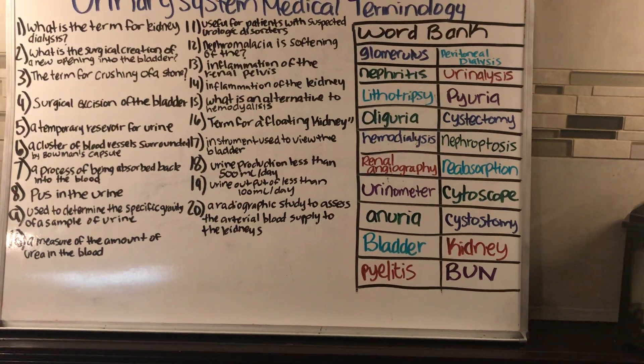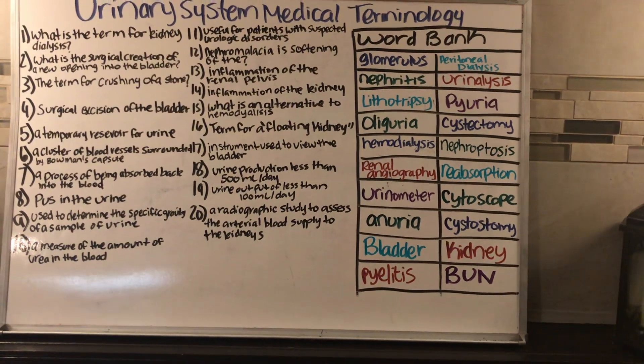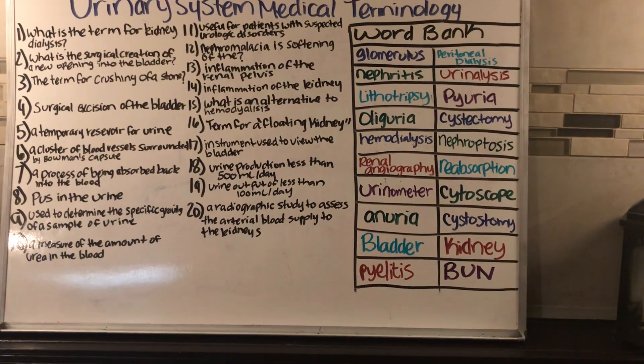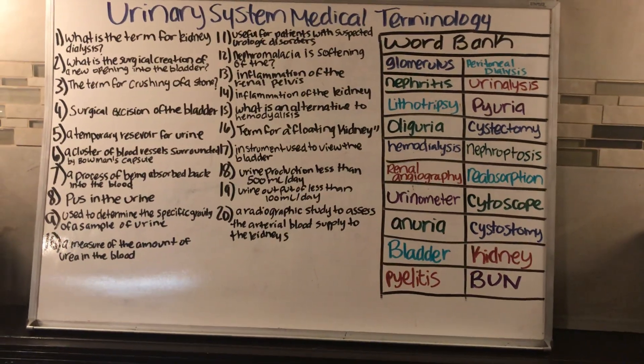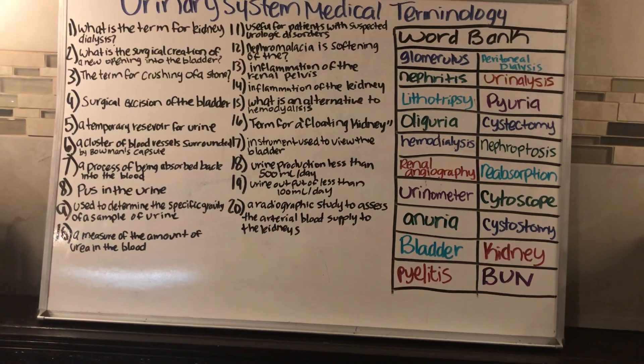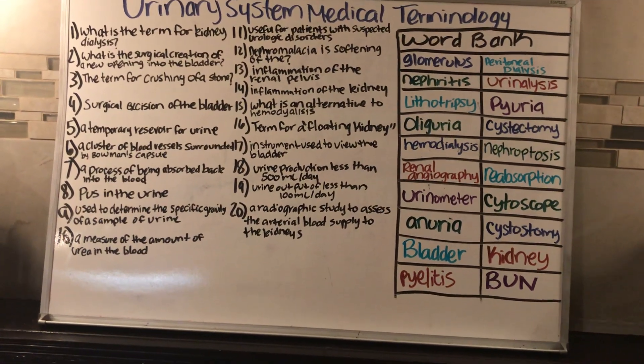Number five: a temporary reservoir for urine is the bladder.